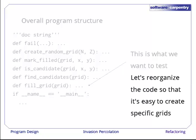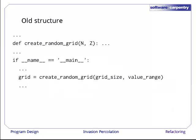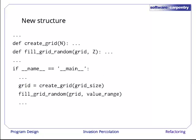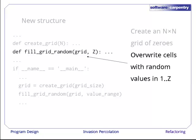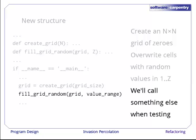Grids are created by the function createRandomGrid, which takes grid size and value range as arguments. Let's split that into two pieces. The first creates an n by n grid containing the value 0. The second overwrites those values with random values in the range 1 to z. We can then call something else in order to fill the grid with non-random values when we're testing. This change is pretty simple and is left as an exercise for the viewer.